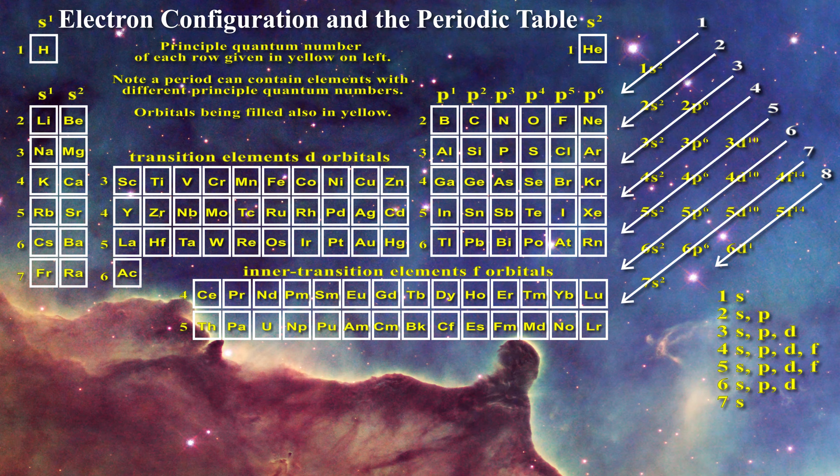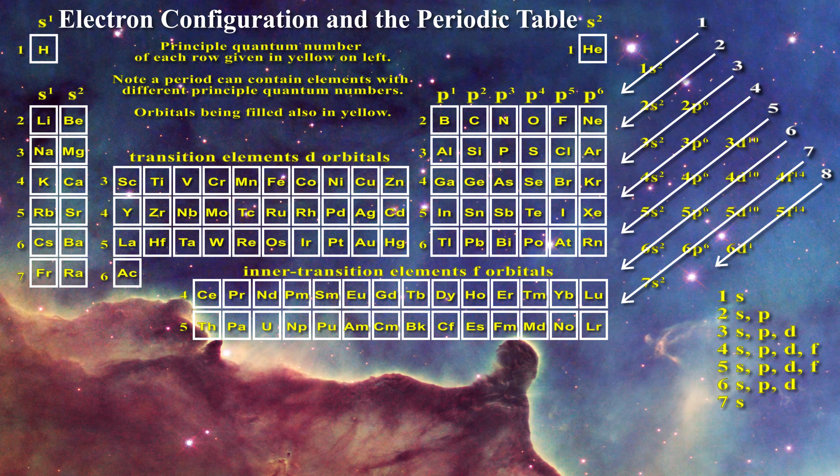Depending on principal quantum numbers, the s orbitals can hold a total of 2 electrons, the p orbitals can hold 6, the d orbitals can hold 10, and the f orbitals can hold 14.